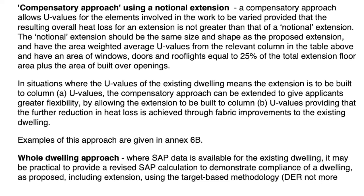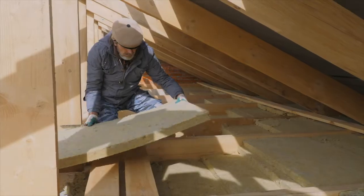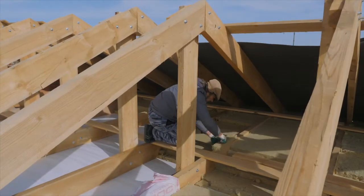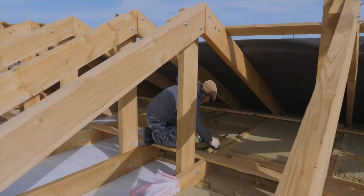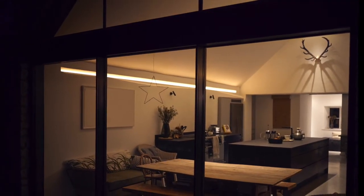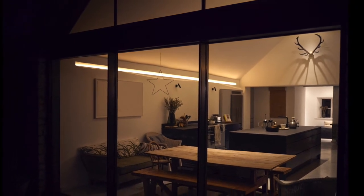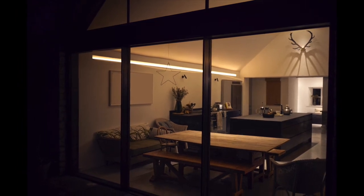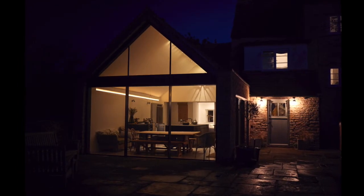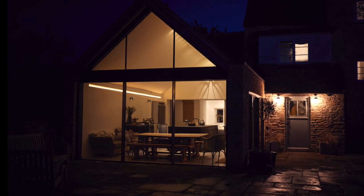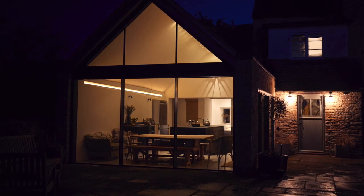It is possible to exceed the allowable area of new openings using what is known as a compensatory calculation. This looks at increasing the amount of insulation in the new walls, floor, and roof of the extension, as well as specifying glazing which exceeds the minimum U-value requirements of the building regulations. I use compensatory calculations on most of my house extensions, and while it does allow the design to have more glazing, the extra amount is minimal — usually just a few square metres more than the 25% calculation allows. The reason is that the minimum U-values required by the building regulations are already very low, so there is almost no heat left to save by adding more insulation.